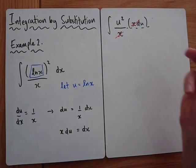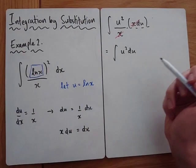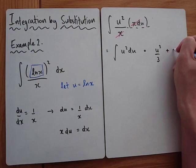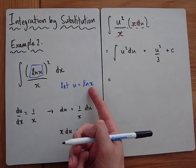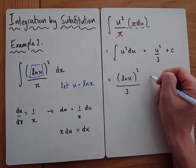Tidying up, the x terms cancel nicely and we're left with the integral of u squared du. That original integral was quite involved, but this one is much easier. Integrating gives u cubed over 3 plus c. Don't forget to replace: u is ln x, so the answer is (ln x) cubed over 3 plus c — that bracket is important because the whole log function is being cubed.